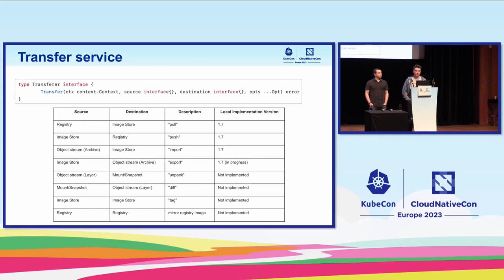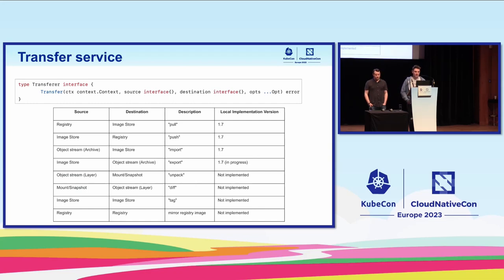Another new addition in 1.7 is the Transfer Service. At a high level, it's a new API to transfer artifacts from source to destination, where source and destination are pluggable components specified when initiating a new transfer session. For instance, if we want to pull an image from an OCI registry, we specify the registry as a source plugin and image store as a destination. With this new architecture, nothing prevents us from implementing new source plugins to support arbitrary data sources. We already support push, pull, and import operations in 1.7 — essentially a lot of code moved from the client to the daemon side, but now we have much more granular control over the process.